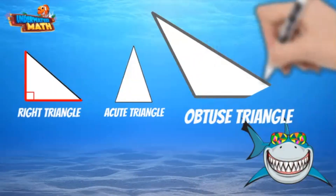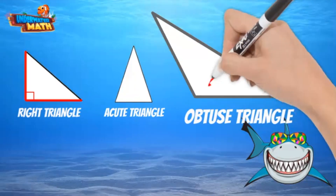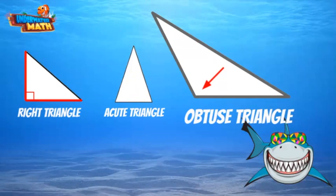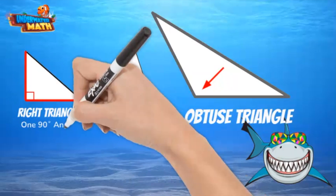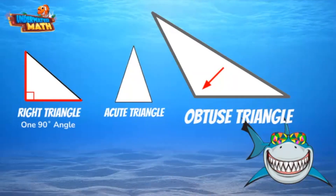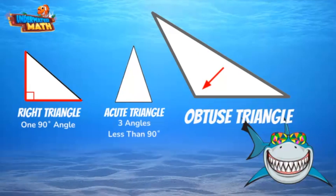Obtuse triangles have one angle measurement that is greater than 90 degrees. To recap: right triangles have one 90-degree angle, acute triangles have three angles less than 90 degrees, and obtuse triangles have one angle greater than 90 degrees.